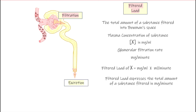We can use the filtered load — the amount that actually makes it into the renal tubule — and compare it to the amount that shows up in the urine. A common clinical test is the 24-hour urine collection, where urine is collected over a full day, sent to the lab, and the total amount of various substances is measured. Comparing those values to the filtered load helps assess which parts of the kidney may be having difficulties.